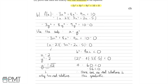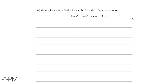In terms of the marking, you'll get one mark for deducing there are no real solutions to the quadratic, and one mark for finding the two real solutions — two marks total for part b. Now let's move on to part c: deduce the number of real solutions for theta between 7 pi and 10 pi for the equation 3 tan cubed theta minus 8 tan squared theta plus 9 tan theta minus 10 equals 0.